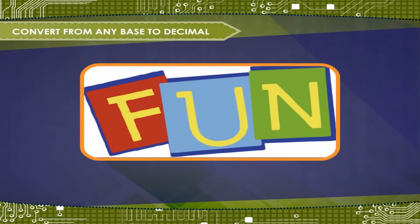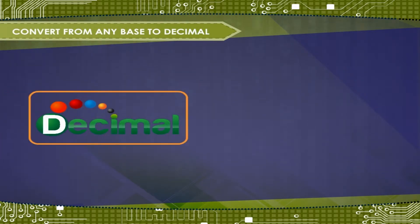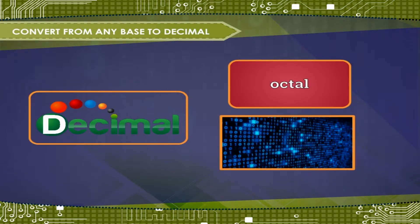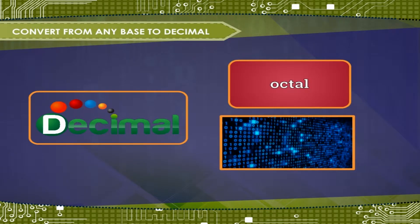Let us have fun now and play with numbers. Convert some decimal numbers into octal and binary and watch what the equivalent numbers are in different systems. So far you have learnt how to convert from any number system to decimal. Now you will learn to convert from decimal to another system.